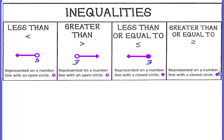And then the greater than or equal to will look like this. Again, the circle is going to be filled in because of this equal to sign right here. And because it's greater, our line goes to the right.